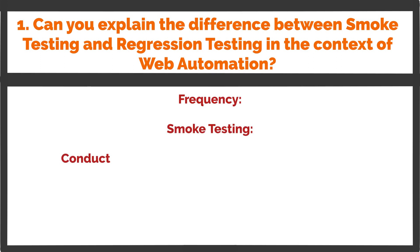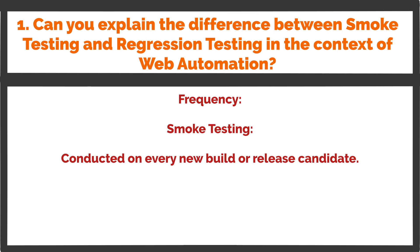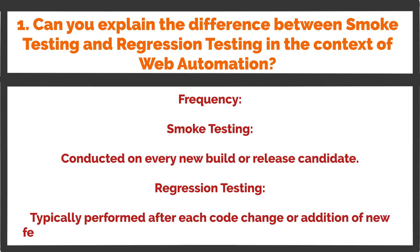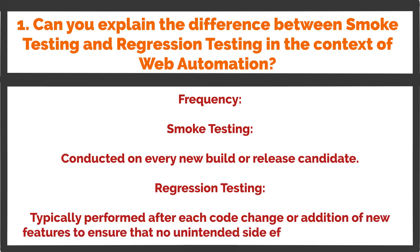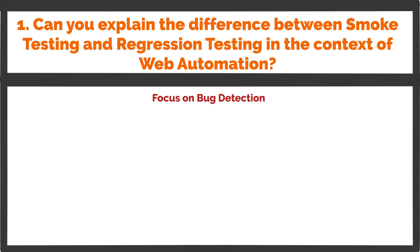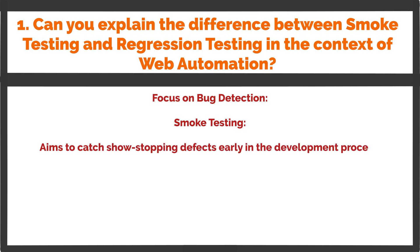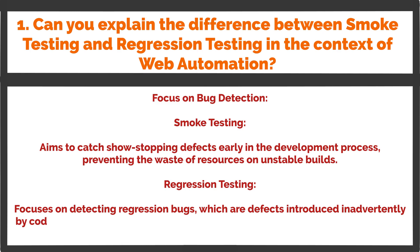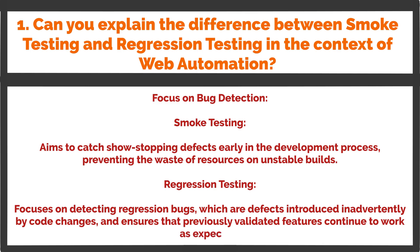Smoke testing is conducted on every new build or release candidate. Regression testing is typically performed after each code change or addition of new features to ensure that no unintended side effects have occurred. Smoke testing aims to catch show-stopping defects early in the development process, preventing the waste of resources on unstable builds. Regression testing focuses on detecting regression bugs — defects introduced inadvertently by code changes — and ensures that previously validated features continue to work as expected.